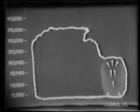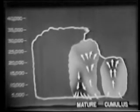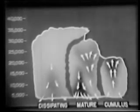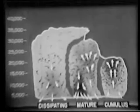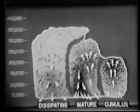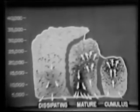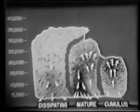Every thunderstorm cell passes through these three stages — cumulus, mature, and dissipating — producing turbulence, thunder, lightning, rain, hail, snow, and ice crystals. The intensity of any storm is dependent on its stage of development.